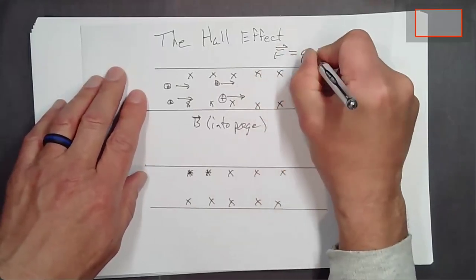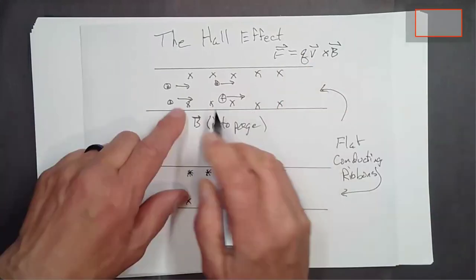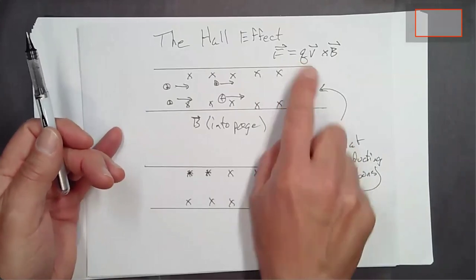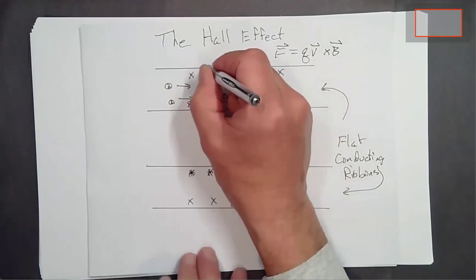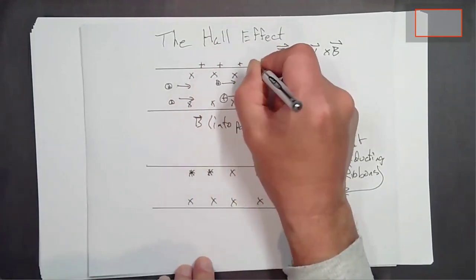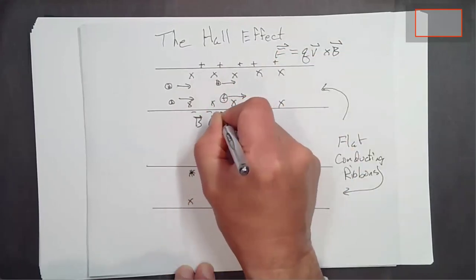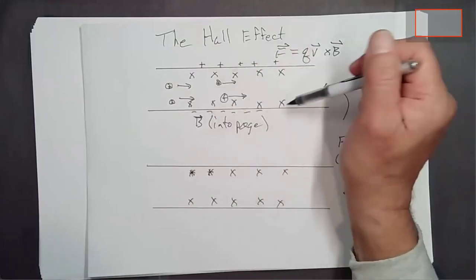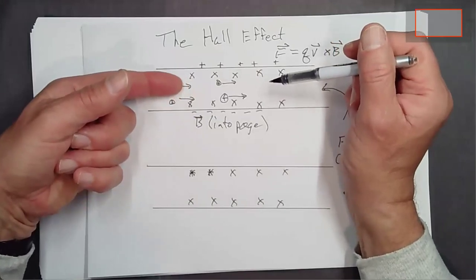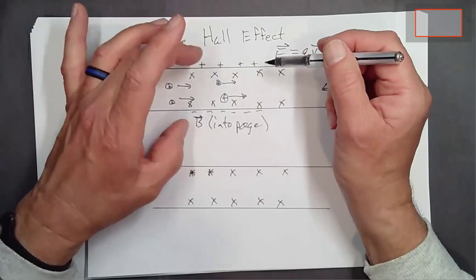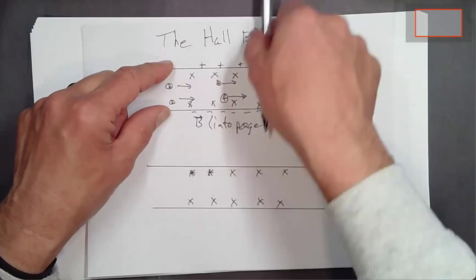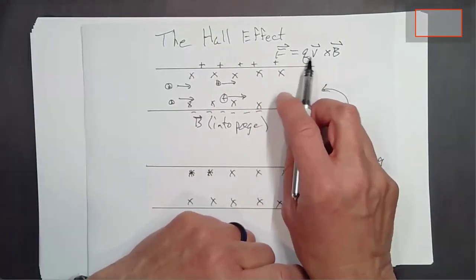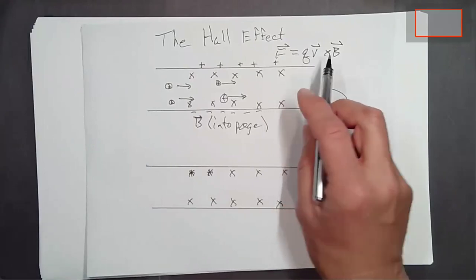Positive charges moving in a magnetic field — the force on each positive charge will be QV cross B. If the charges are moving to the right, V cross B is going to be up, and Q is positive. So what'll happen is you end up with a buildup of positive charge on the top edge of this conductor, and on the bottom you'll have a buildup of negative charge, because those positive charges left behind negative matter down here.